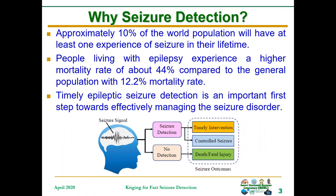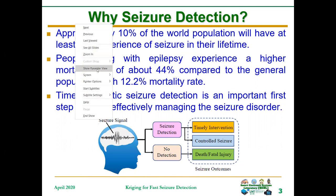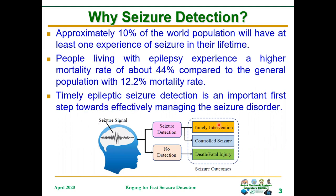People living with epilepsy experience a higher mortality rate of about 44% compared to the general population, which has a mortality rate of 12.2%. Timely epileptic seizure detection is an important first step towards effectively managing the seizure disorder and reducing the mortality rate. As you can see from this figure, when there is seizure detection, there can be timely intervention and the seizure can be easily controlled. When there is no detection, it can lead to death or fatal injury.